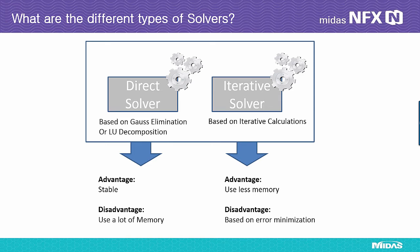For structural analysis, it must be cautioned that an iterative solver may not provide the desired solutions due to the numerical characteristics of the matrix, or the amount of iterative calculations may become significant in arriving at converged solutions. MinusFX provides a function that automatically selects between the direct solver and iterative solver depending on the scale of the problem required to be analyzed.